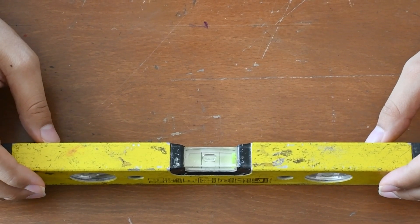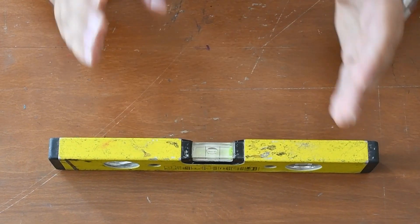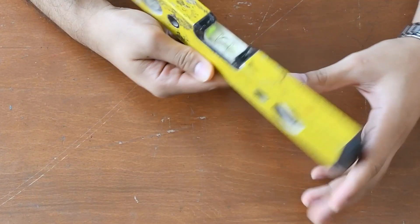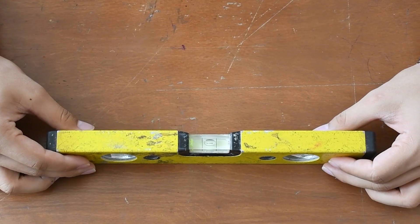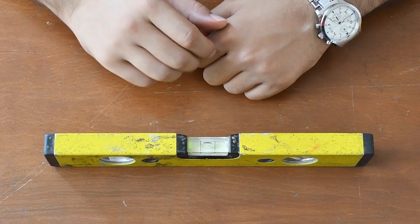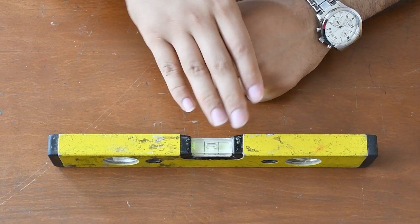Now I do the same as before. I rotate it 180 degrees and look at the location of the bubble. As you can see, the new location of the bubble is similar to the previous location.